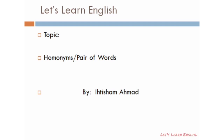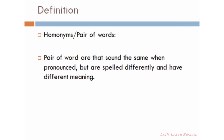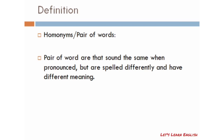So before we start, what are homonyms? Homonyms or pair of words are words that sound the same when pronounced but are spelled differently and have different meanings. These are basically those words which produce the same sound, but their spellings and meanings are different.